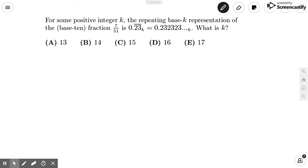So in this problem, it states how for some positive integer k, the repeating base k representation of the fraction 7 over 51 is 0.23 repeating, and they want us to find k.